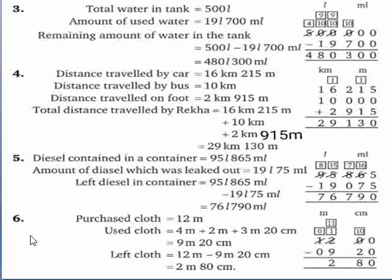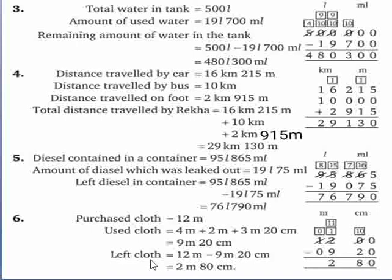Question number 6: Shreya purchased 12 meter cloth. She used 4 meter for her salwar kameez, 2 meter for a shirt and 3 meter 20 cm for a frock. Find the total length of cloth left with Shreya. Purchased cloth equal to 12 meter. Total used: 4 meter plus 2 meter plus 3 meter 20 cm. Firstly inhe plus karenge — answer aayega 9 meter 20 cm. Now left cloth find karne ke liye 12 meter mein se 9 meter 20 cm minus karenge. So our answer is 2 meter 80 cm left cloth.